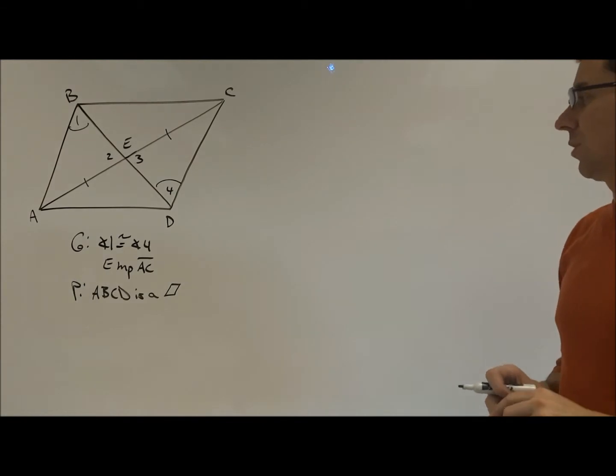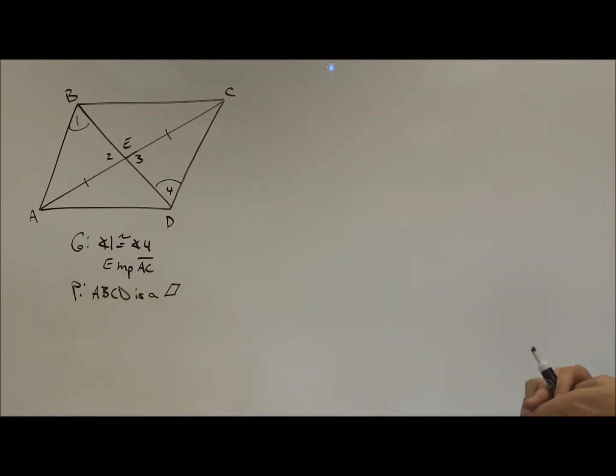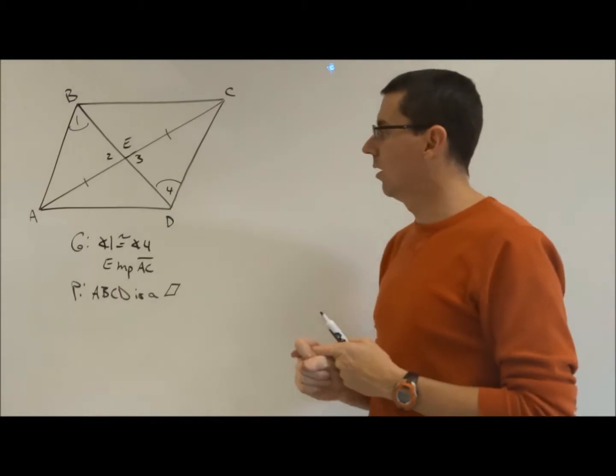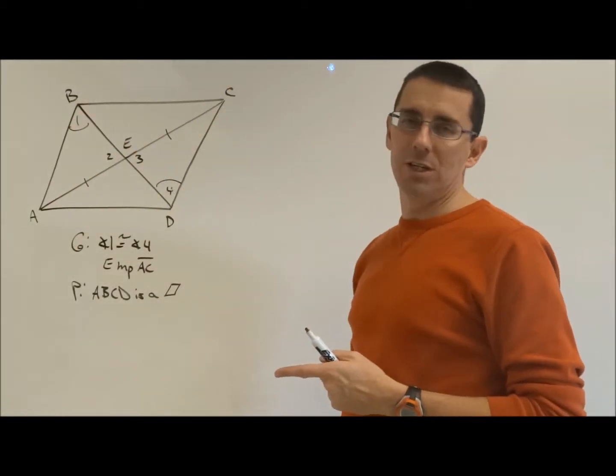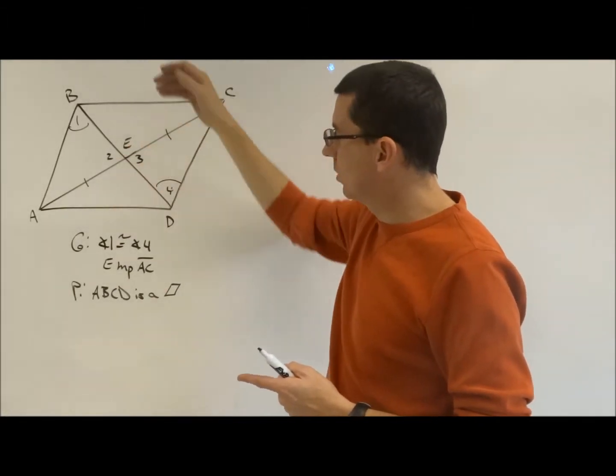So I look at this and it's going to be like, alright, well which of those five ways do I want to use? First way was both pairs of opposite sides parallel. The fact that 1 equals 4, I'm going to be able to get AB parallel to CD pretty quickly. But I don't have anything with the other ones.